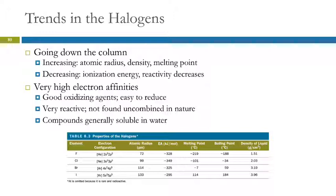They have high electron affinities. They're good oxidizing agents because they're very easy to reduce. Reduction is gain of electrons. Halogens gain electrons easily. They're also very reactive. You don't find them uncombined in nature either. And their compounds are also generally soluble.